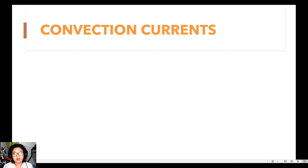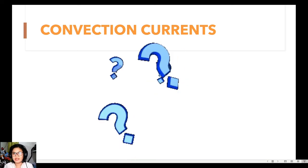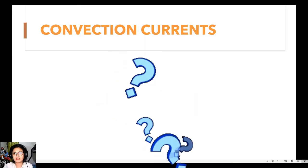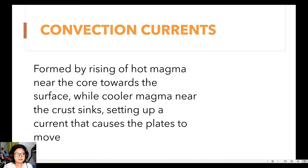Now let's go to the concept of convection currents. Convection currents are formed by the rising of hot magma near the core towards the surface, while cooler magma near the crust sinks, setting up a current that causes the plates to move. The lithospheric plates are constantly moving, and convection currents are what fuel or cause them to move.